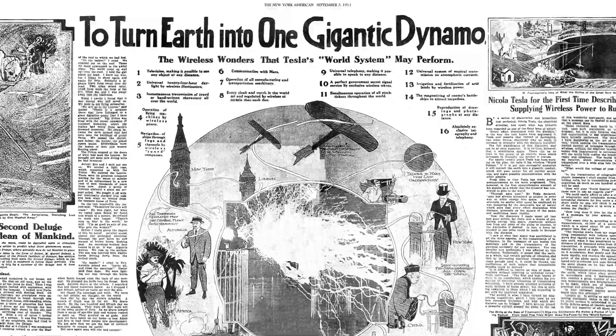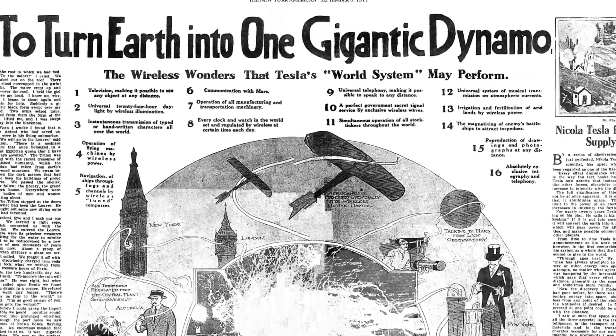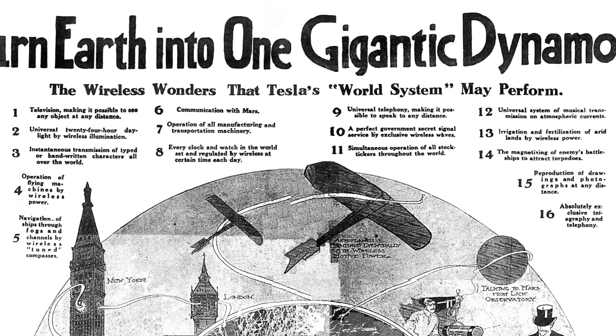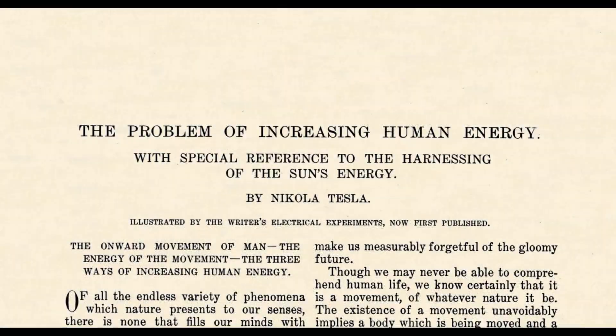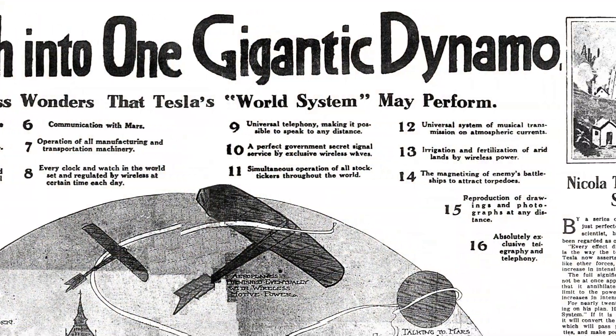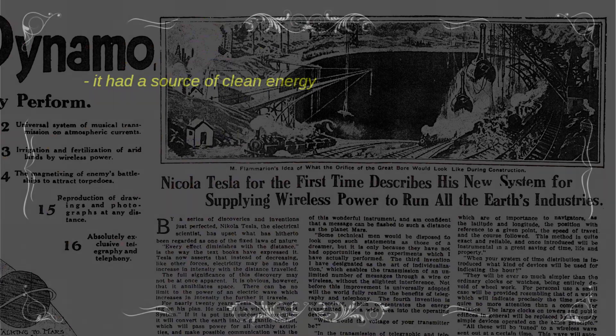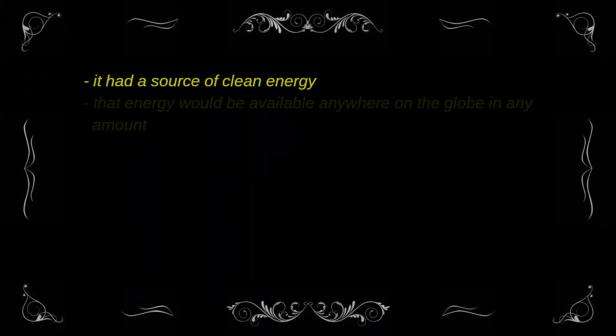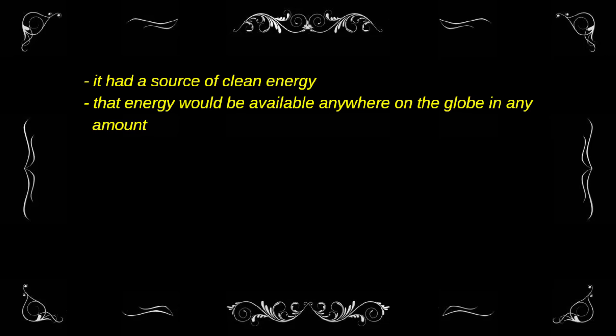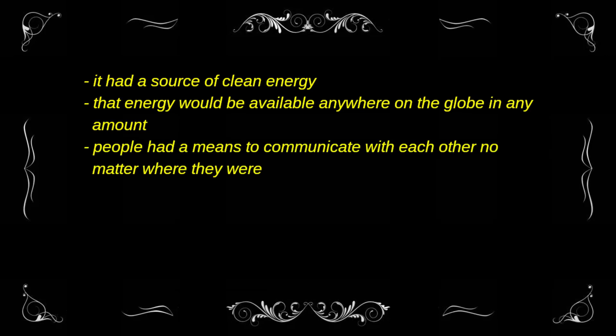What was Tesla's world system? Nikola Tesla, as he explains in his most famous article of June 1900, the problem of increasing human energy, recognized that humanity would be best served if it had a source of clean energy that would be available anywhere on the globe, in any amount, and people had a means to communicate with each other no matter where they were.